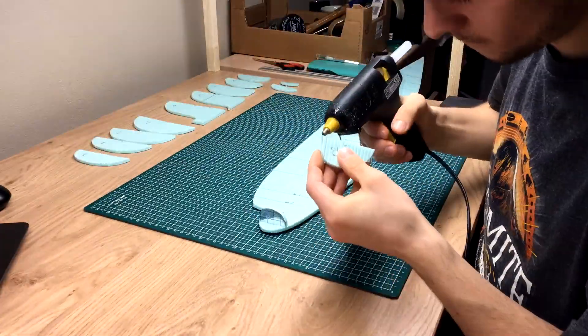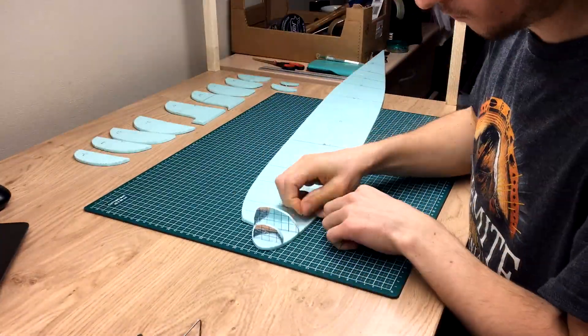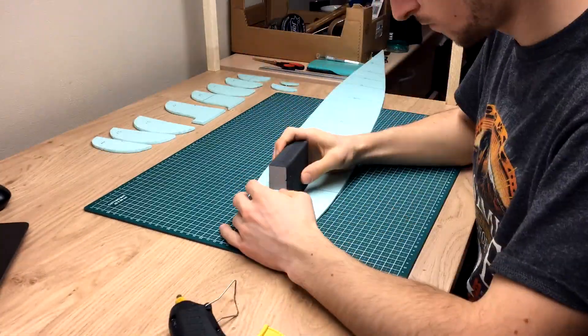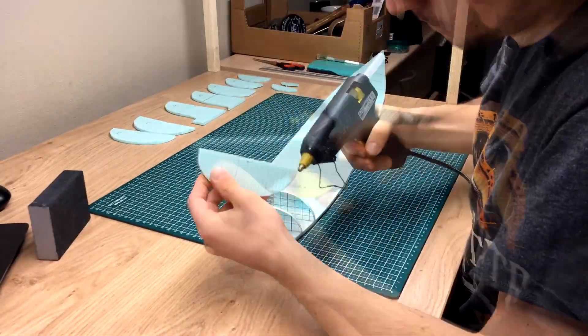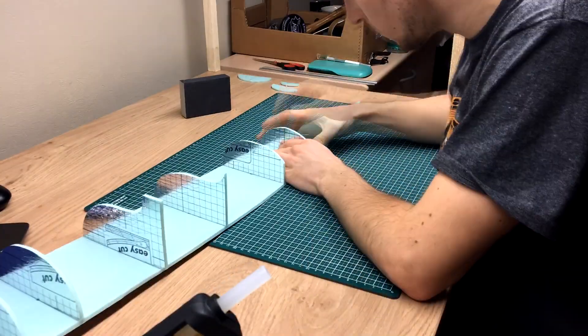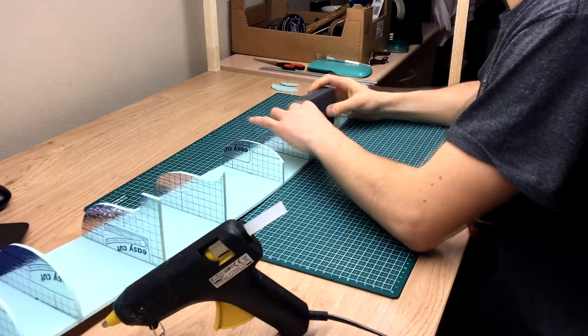Now, it's finally time to assemble the fuselage framework. Adhesive of choice: hot glue. It holds well on the foam, doesn't make a mess, and it cures fast.